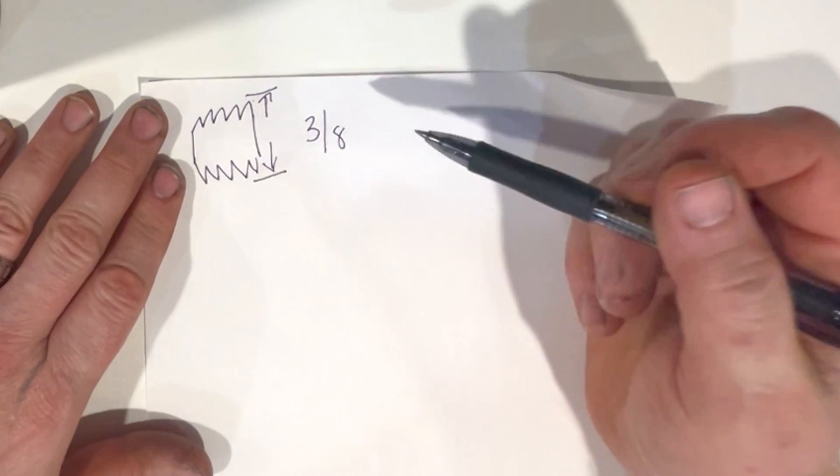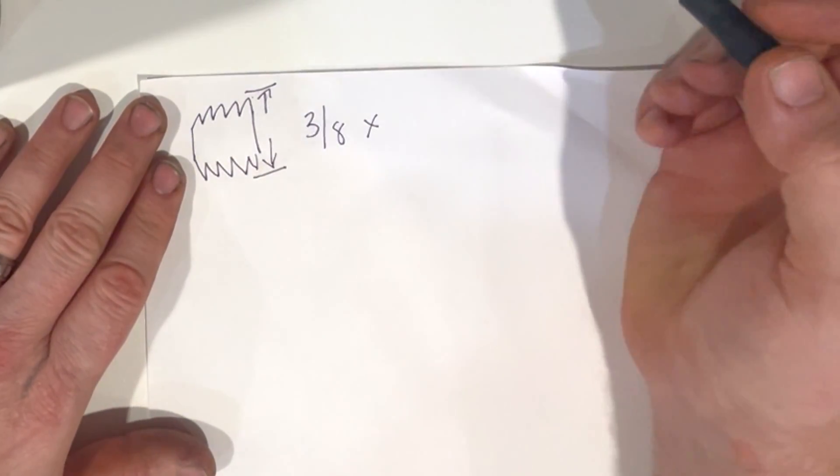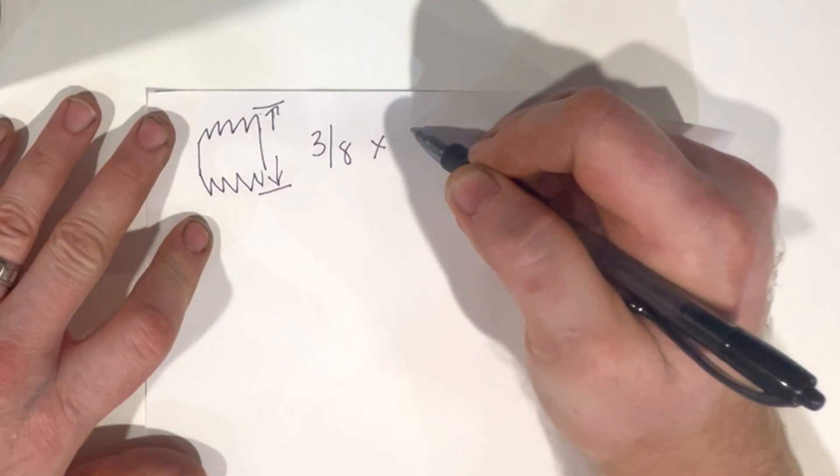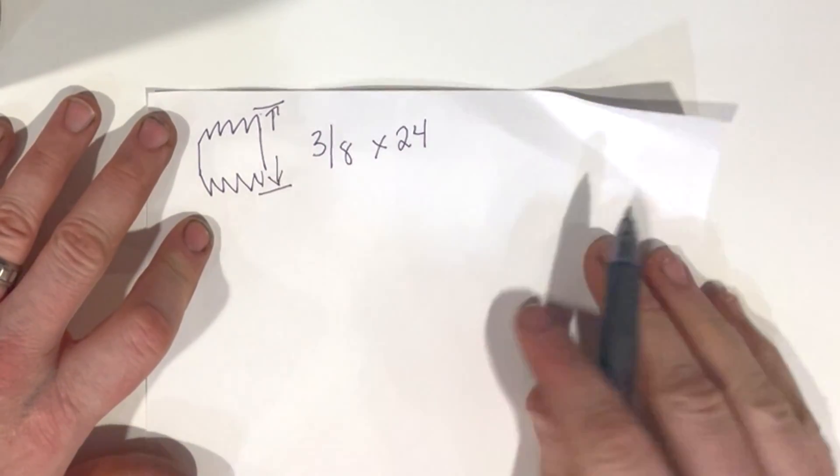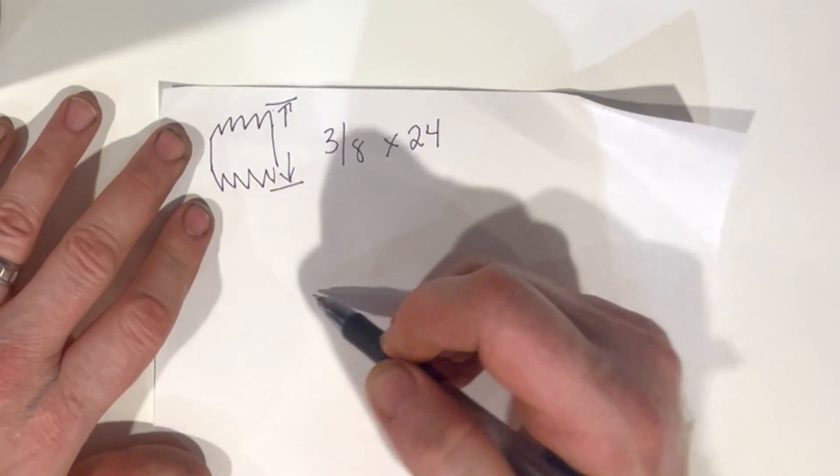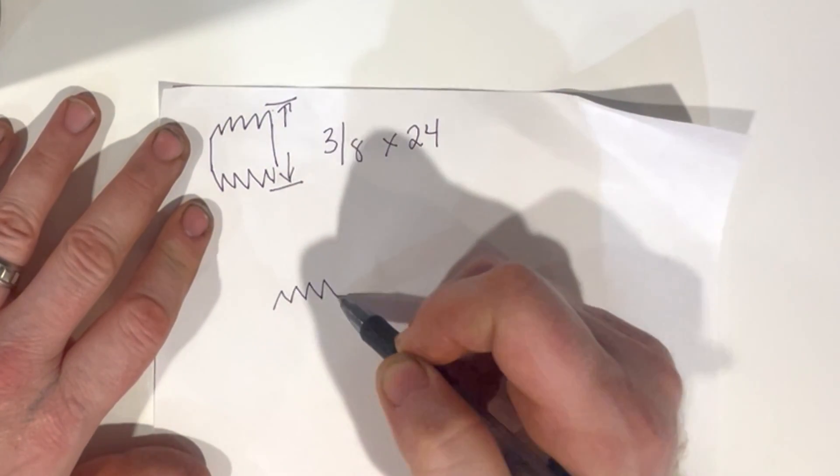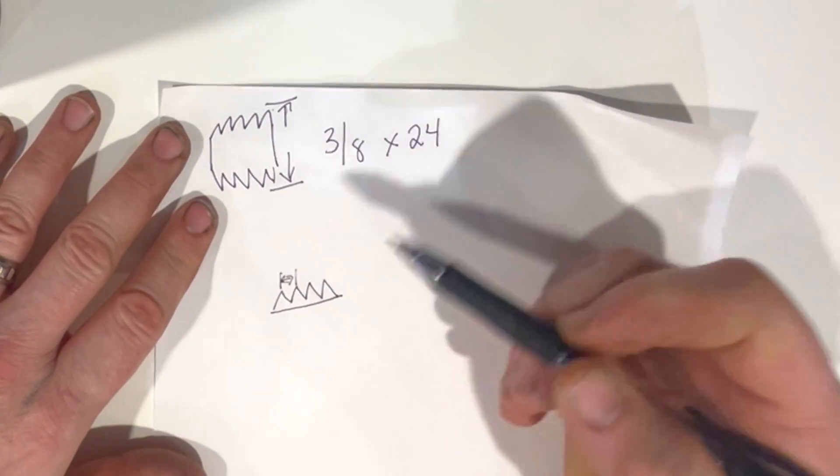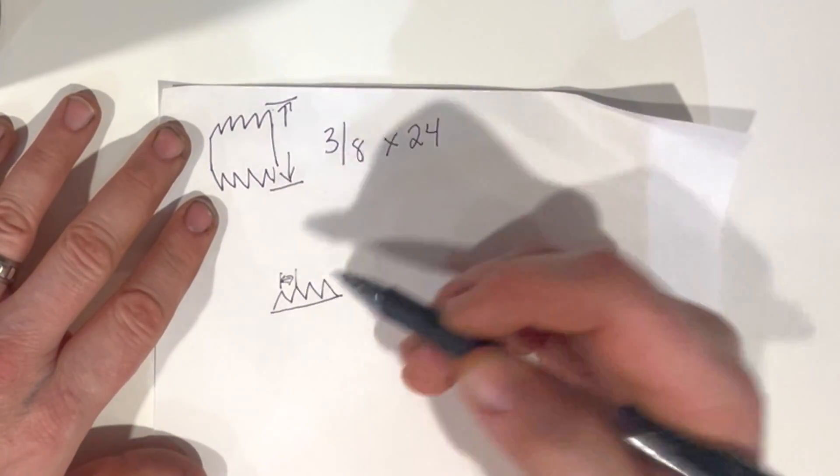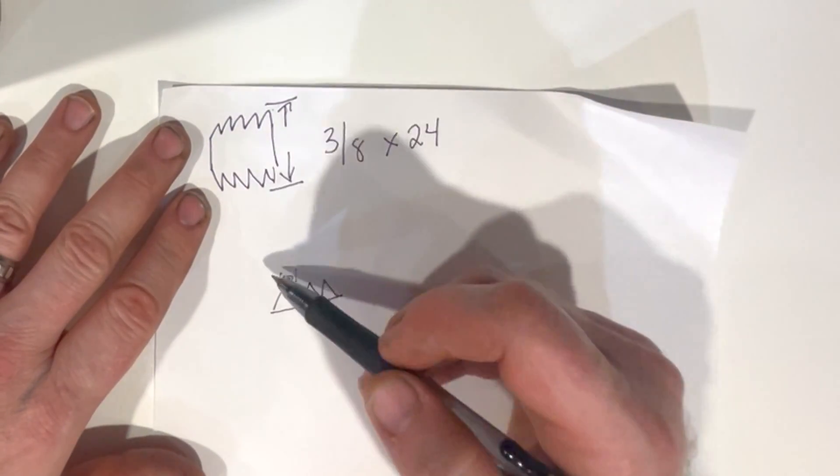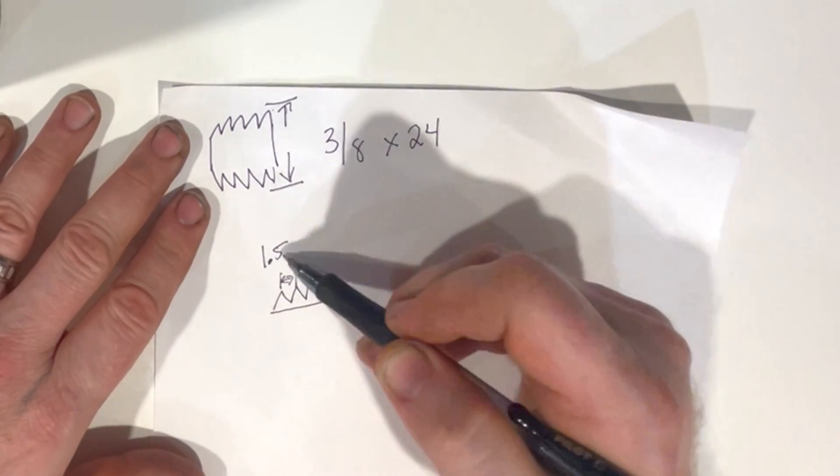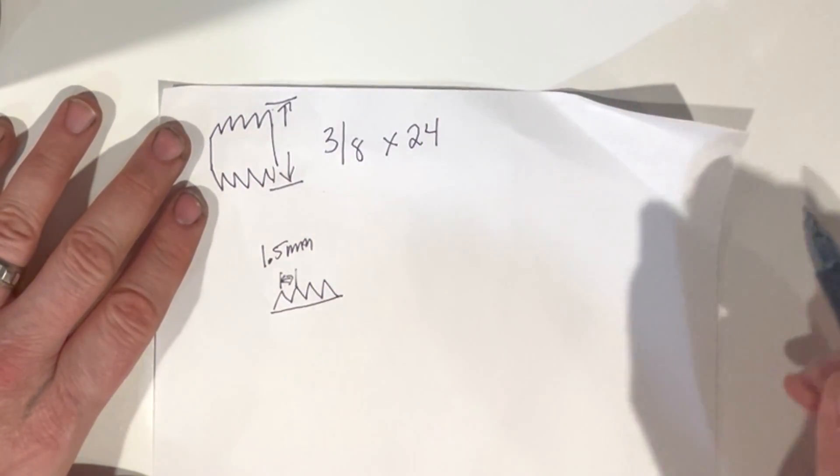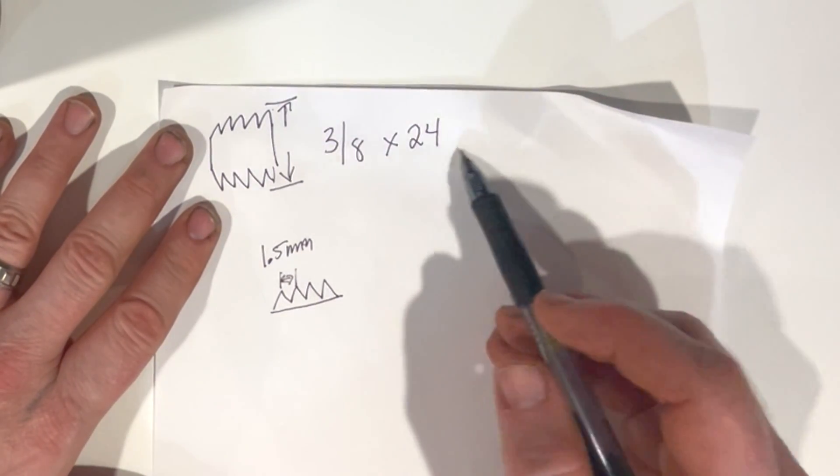That would be the first number of a thread. The second number is its pitch, and this can be expressed in one of two ways depending on whether it's metric or standard. So I'm just going to call it three-eighths by 24. In metric, we have a bunch of threads but the only thing we care about is the distance from one thread to the next, kind of like a wave, that would be its wavelength as opposed to its frequency. In upcoming examples it'll be 1.5 millimeters. That would be 1.5, just as a random example. It could be a whole host of numbers, and we'll find that certain numbers, certain pitches, are common with its overall diameter.